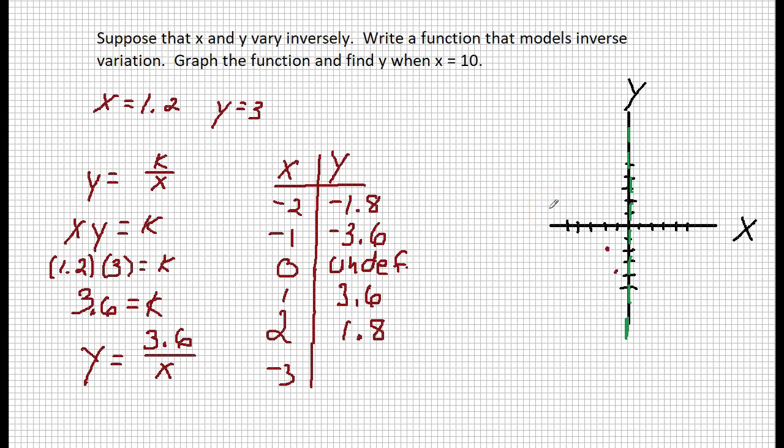So if I take 3.6 divided by negative 3, I get negative 1.2. So that means at positive 3, it will be at positive 1.2. Negative 3, negative 1.2 is just a little below negative 1. Do you see how this is curving like this?